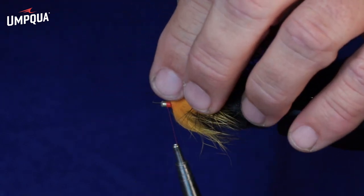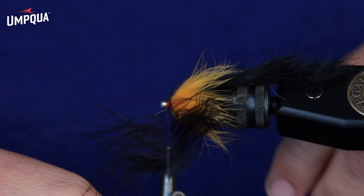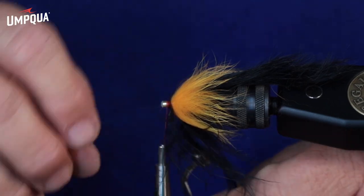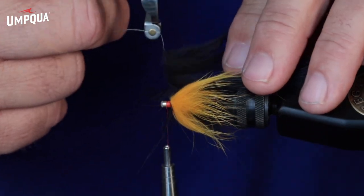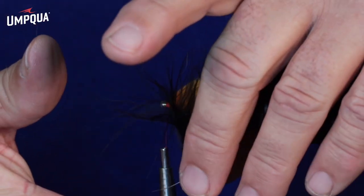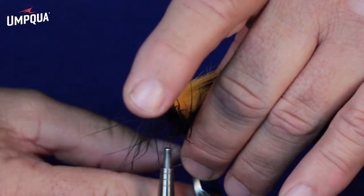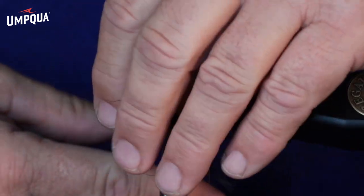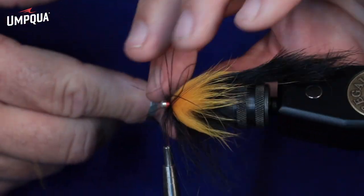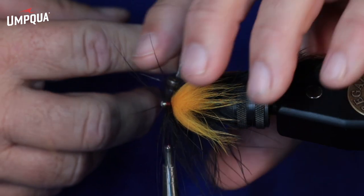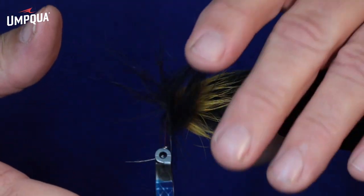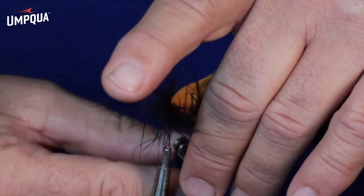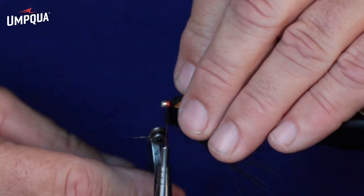I'm going to fold these fibers back as I start to wrap this forward. Like I said, I just want just a hint of marabou, and I really don't care how it goes on, because I'm going to force it to go back, and that rabbit will make sure that rabbit ensures that this marabou will stay where it's supposed to when it's swimming.